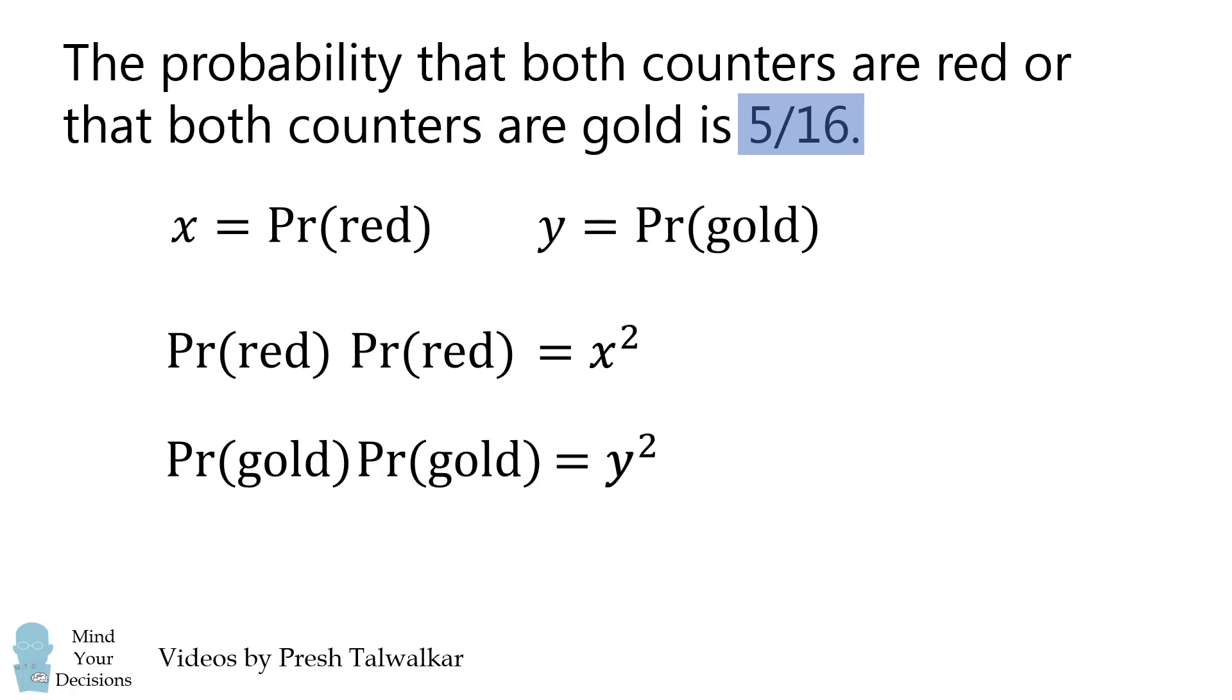Now we want the sum of these two events to be 5 over 16. This is going to be x squared plus y squared is equal to 5 over 16.